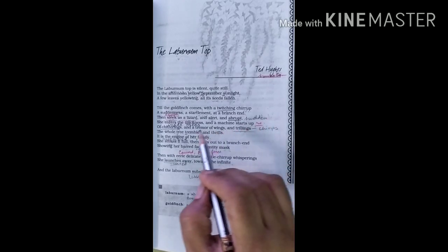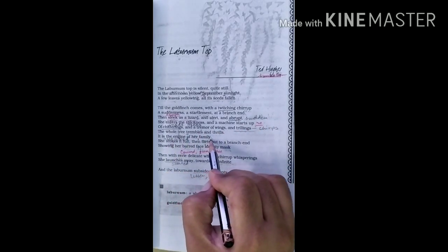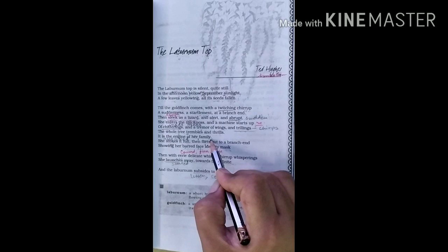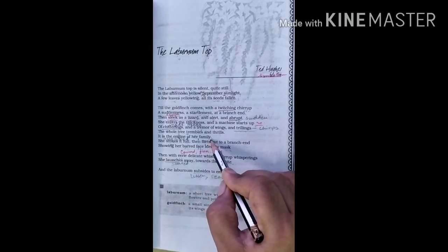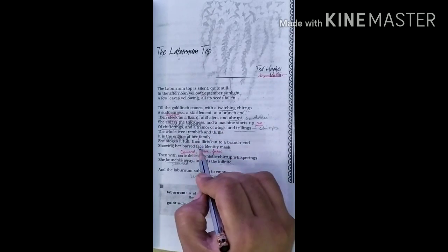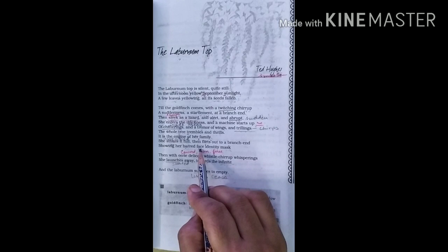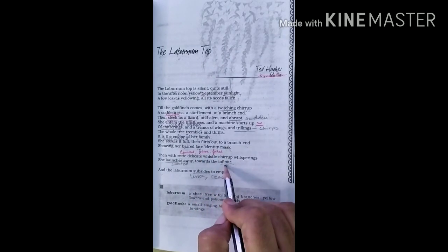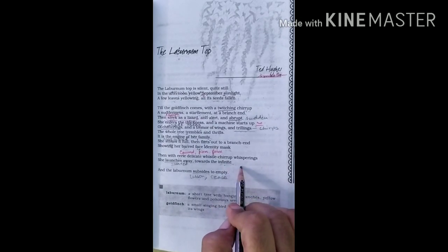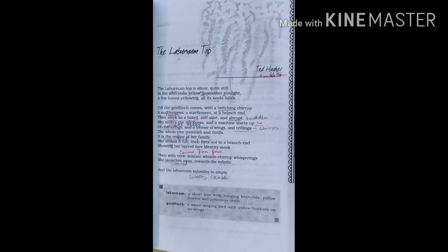Thus it becomes the engine of her family. She feeds the young ones and after feeding them, she comes to a branch and showing her barred face to whom? To the small ones. Finally, with a whistle chirrup, she flies towards the vast sky, leaving the tree once again calm and quiet. So this is the explanation.